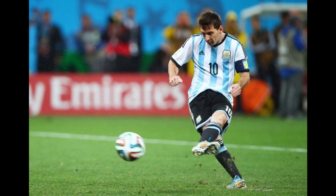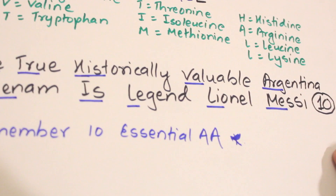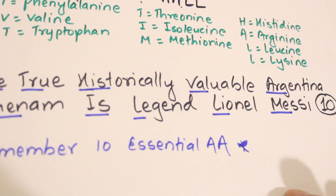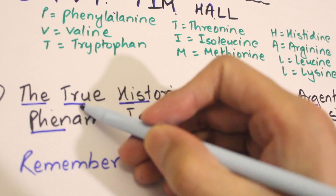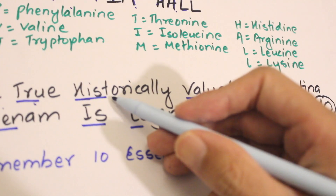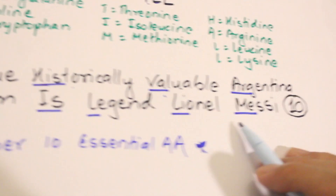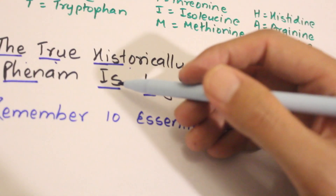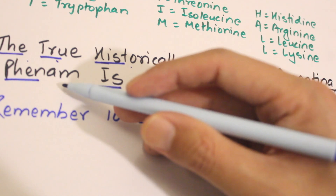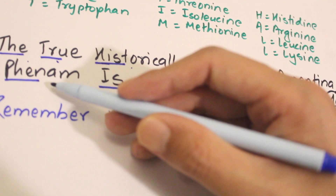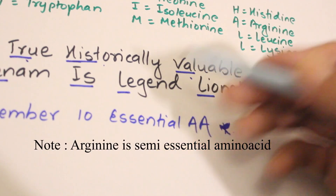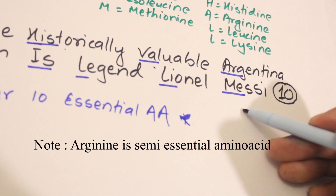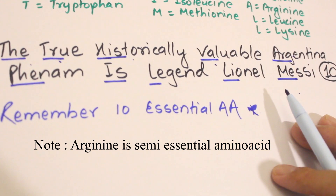Lionel Messi wore jersey number 10, so there are 10 essential amino acids. From 'True' — Threonine; from 'True' — Tryptophan; from 'Historical' — Histidine; from 'Valuable' — Valine; 'Argentina' — Arginine; 'Phenam' meaning talented/outstanding — Phenylalanine; 'Tri' — Isoleucine; 'Leunald' — Leucine; 'Li' — Lysine; 'Messi' — Methionine. This is an easy way to remember the 10 essential amino acids.